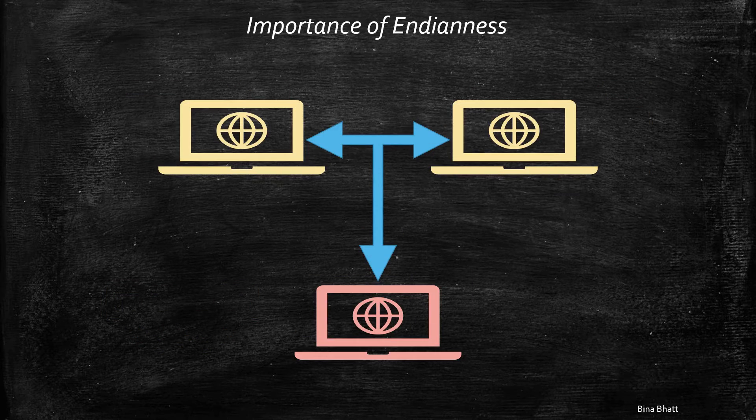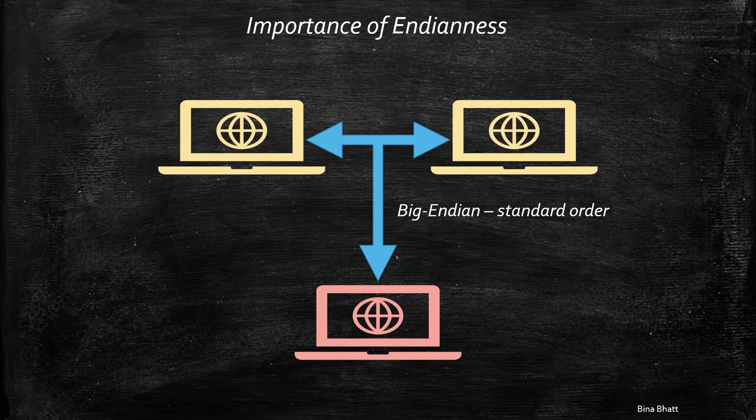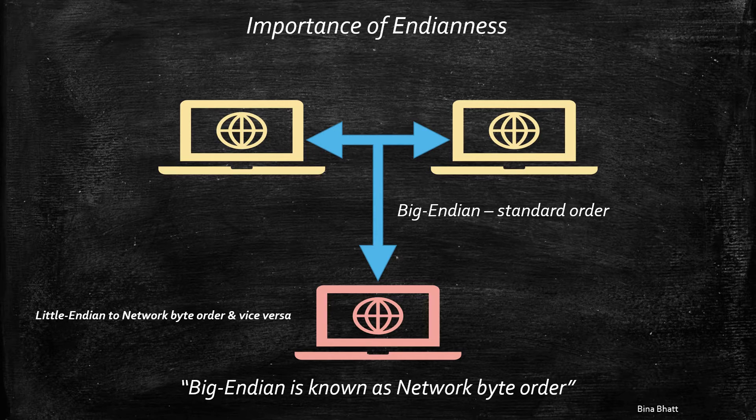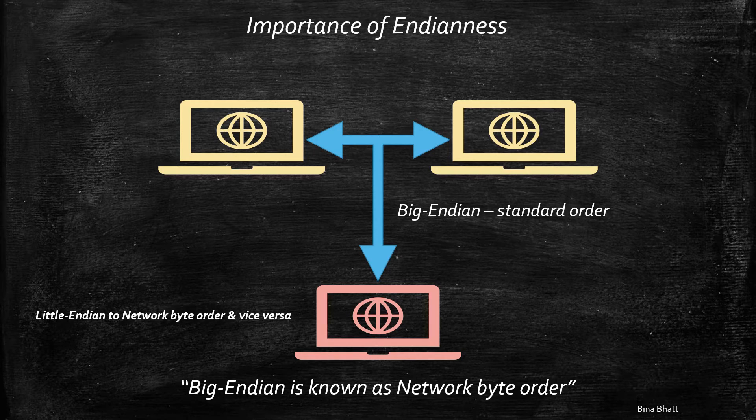Now, in case of internet, which is a vast network of computers, big endian byte order is used as a standard. Thus, big endian is often known as network byte order as well. So on the internet, whenever a little endian computer passes the data over the network, it converts it into network byte order. And while receiving it, it converts the data back to its own native representation.